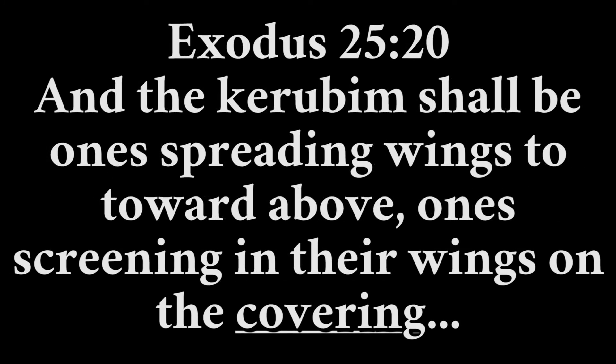We might also consider Exodus 25:20, which is in reference to the Ark of the Covenant. As you know, the lid on the Ark of the Covenant — the mercy seat as it's often called — has the cherubim on top of it. They are spreading their wings out and covering with their wings. It refers to this lid as 'the covering.' This comes from that same word; it is related to the word used as atonement. So is this object a lid for the Ark, a covering for the Ark?